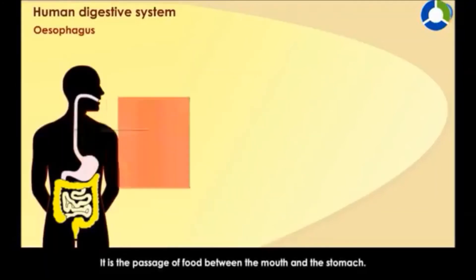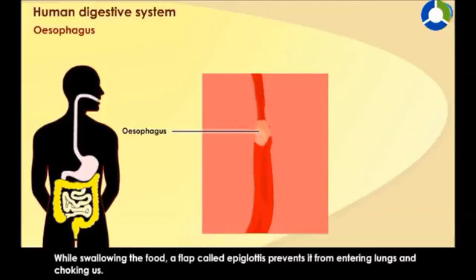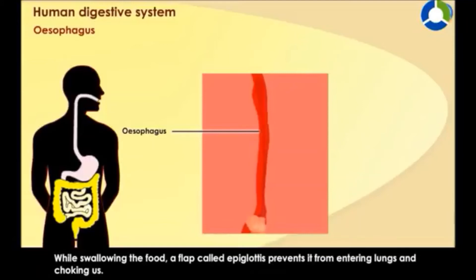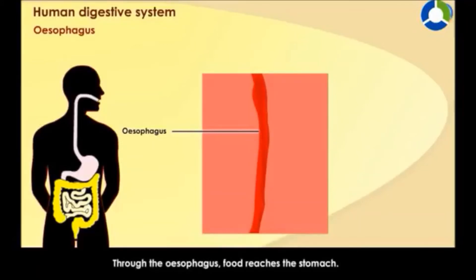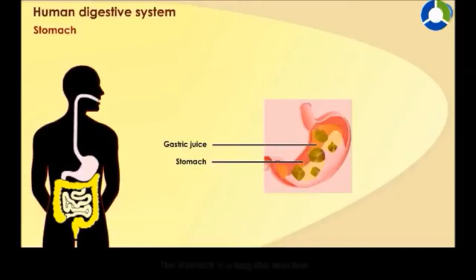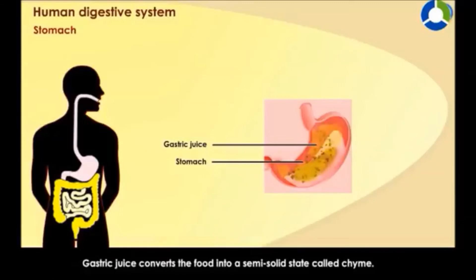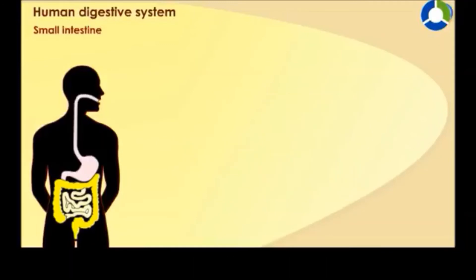The esophagus is the passage of food between the mouth and the stomach. While swallowing, a flap called the epiglottis prevents food from entering the lungs. Through the esophagus, food reaches the stomach. In the stomach, food is mixed with gastric juices secreted by the gastric glands. Gastric juice converts the food into a semi-solid state called chyme.